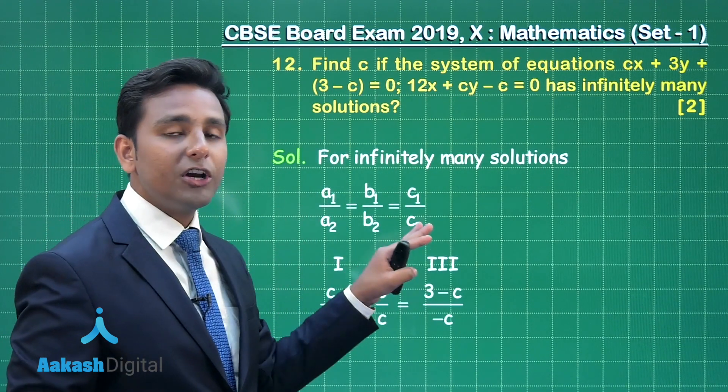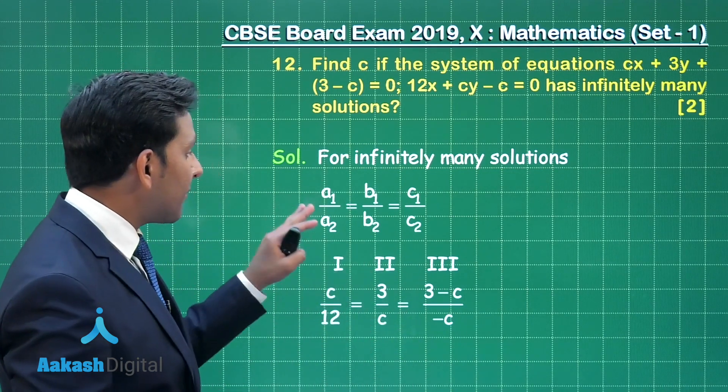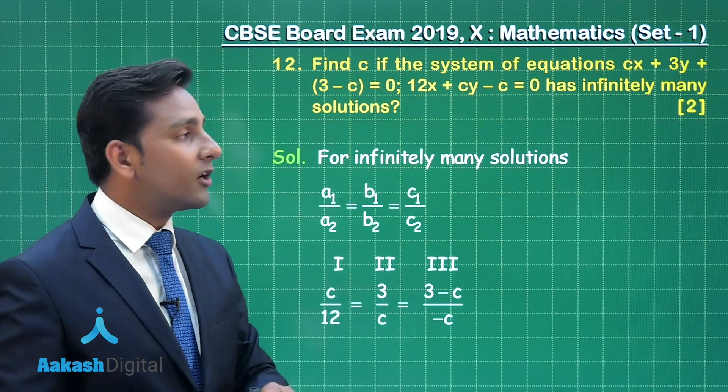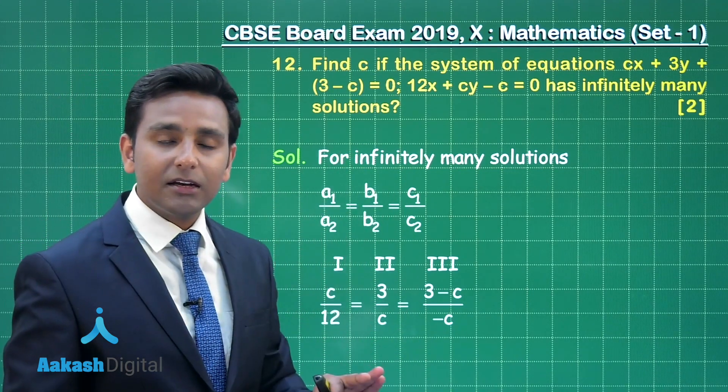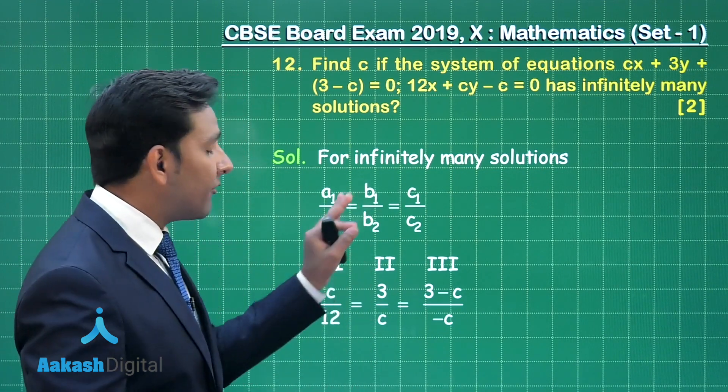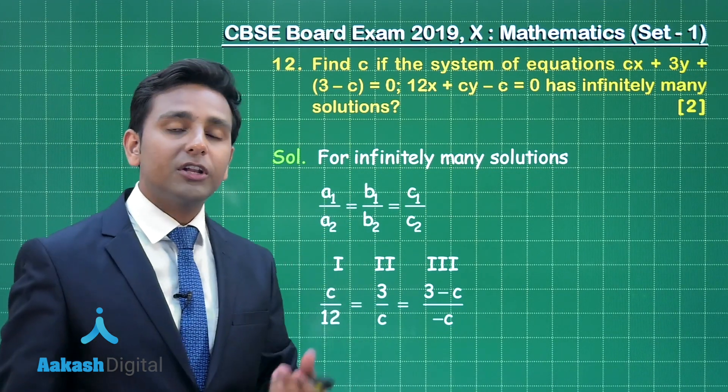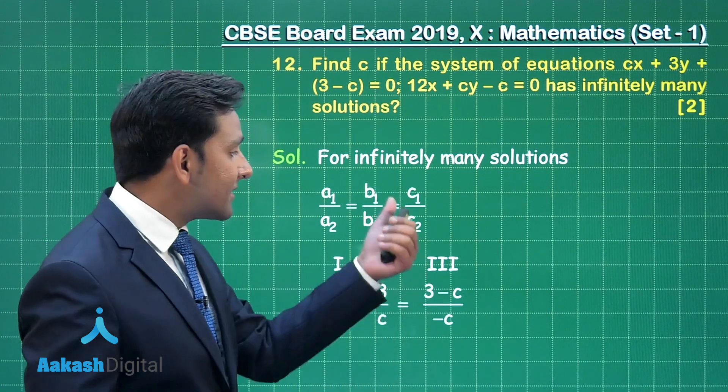First of all, this is the required condition when you get infinitely many solutions. Here A1 upon A2 is the ratio of the coefficients of X in these 2 equations, B1 upon B2 is the ratio of the coefficients of Y, and C1 upon C2 is the ratio of the constant terms.